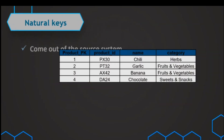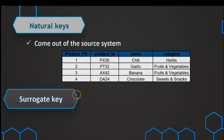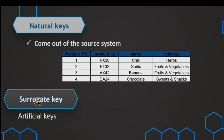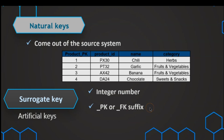A natural key is just coming out of the source system, but we can also generate our surrogate keys. This is nothing but an artificial key — and therefore it is sometimes also called an artificial key. We create those surrogate keys in our ETL process. They are just very simple integer numbers. To identify them as surrogate keys, we use the suffix PK for primary key and FK for foreign keys, so we can immediately recognize that this is the surrogate key.